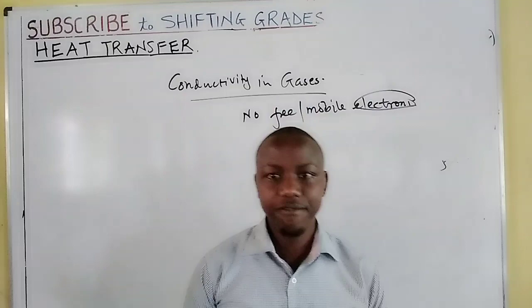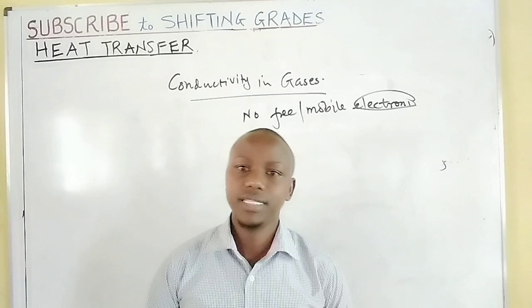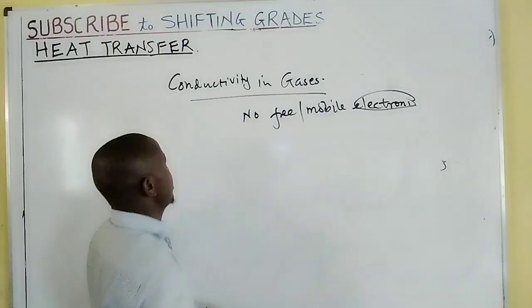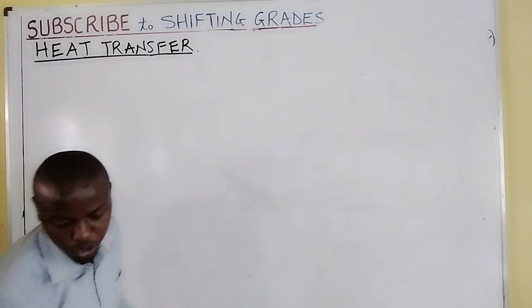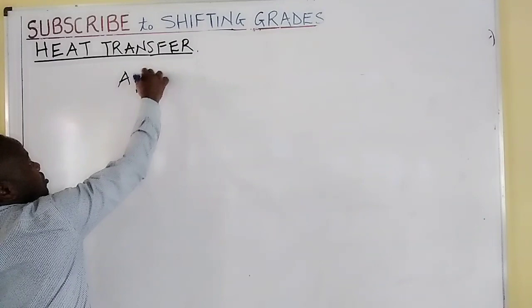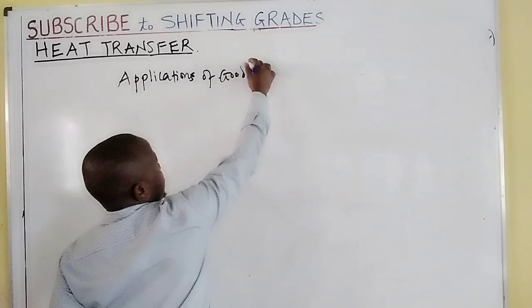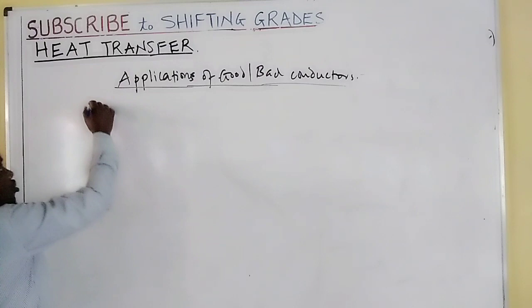So with that, we've seen conduction in each state of matter — in liquids average, solids the best, gases the poorest. Now we can check some of the applications of insulators and of good and bad conductors of heat. They are all applied. Bad conductors have applications; good conductors have applications.